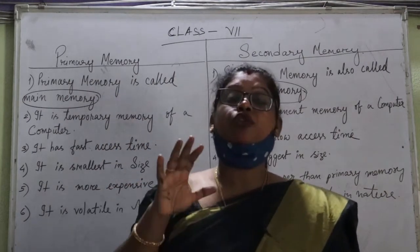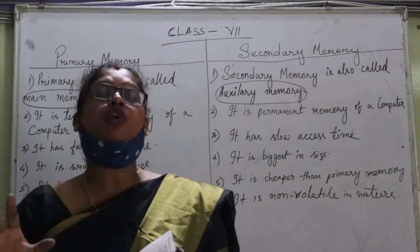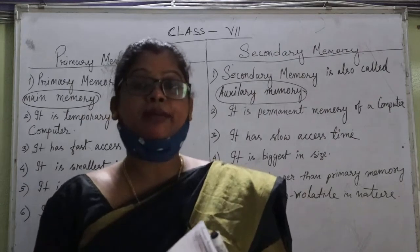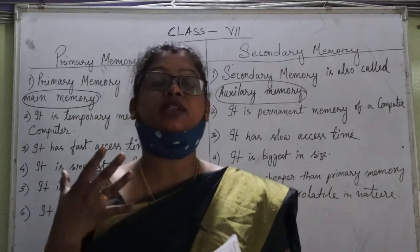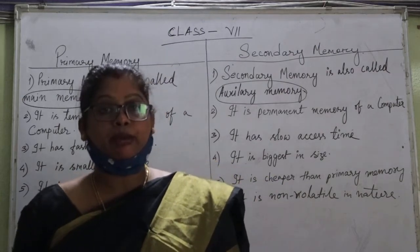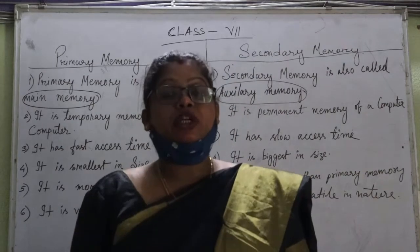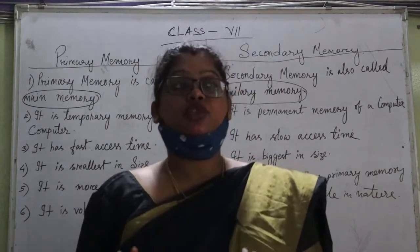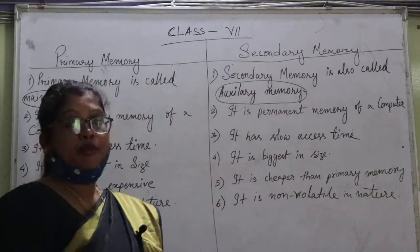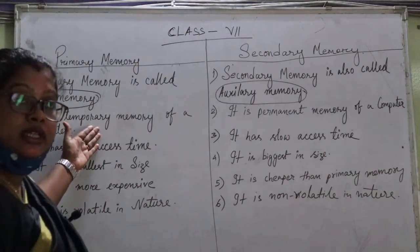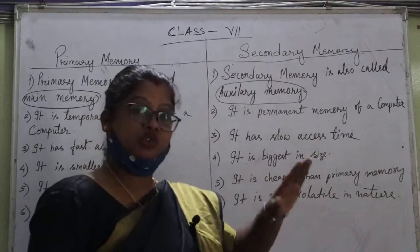Number two point: primary memory is the temporary memory of a computer. The data and programs we store are temporary and can always be deleted. When we are working on the computer and we switch it off, the data we have entered will be deleted. But secondary memory is the permanent memory of a computer — data in secondary memory is not erased. That is why primary memory is called temporary memory, but secondary memory stores data for a lifetime.